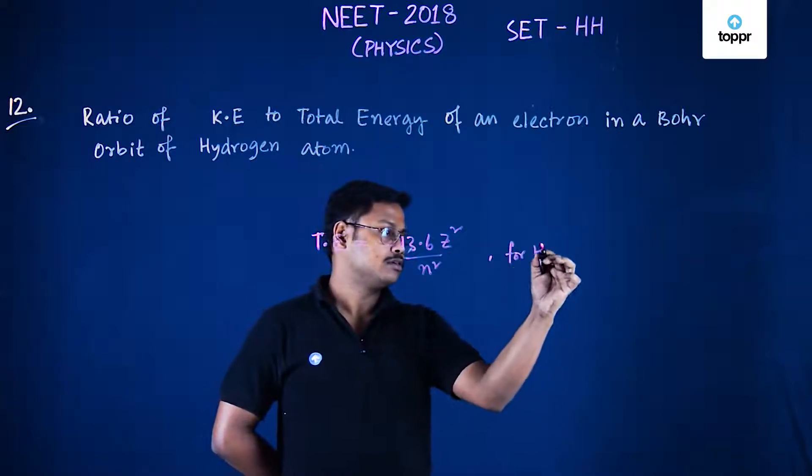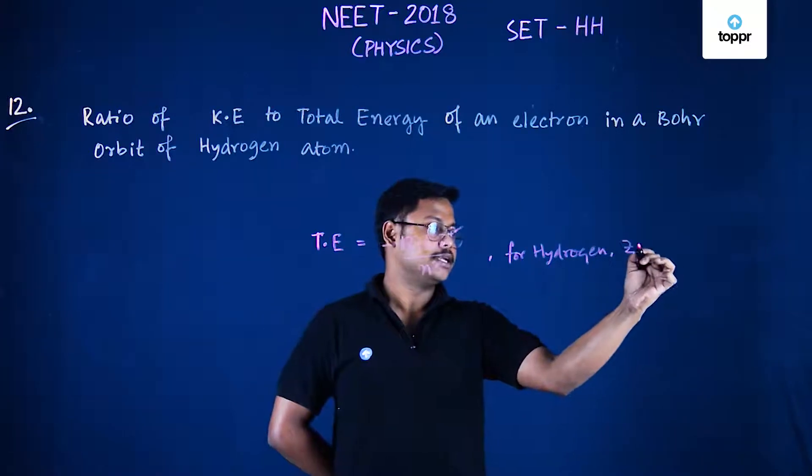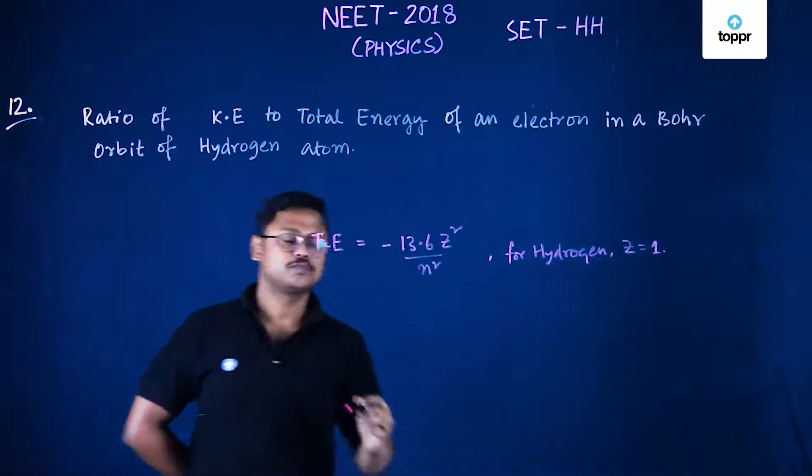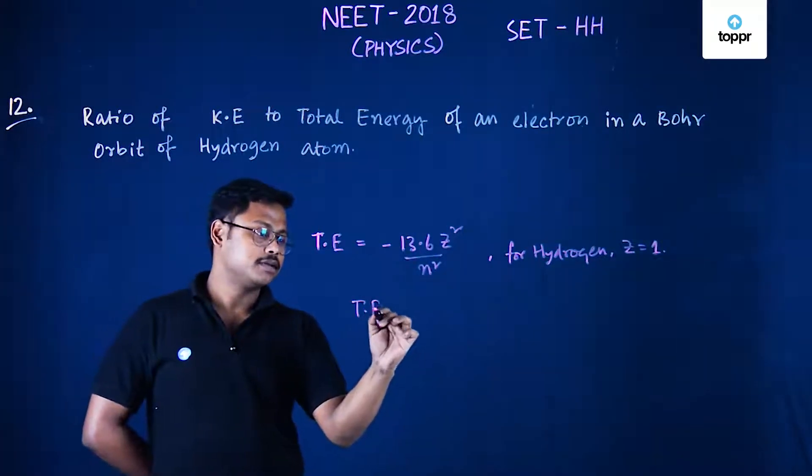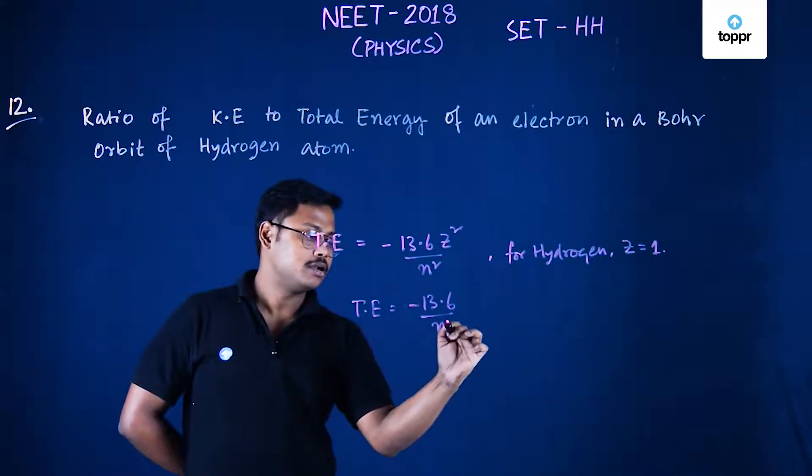So for hydrogen z equals to 1. So total energy can be written as minus 13.6 upon n square.